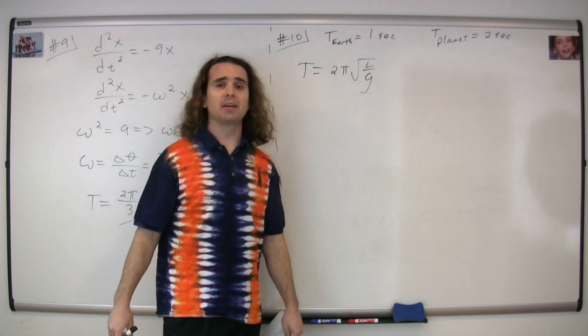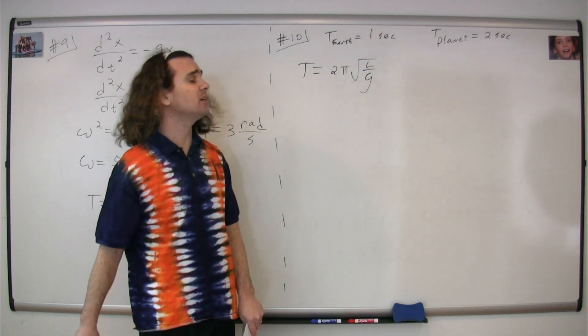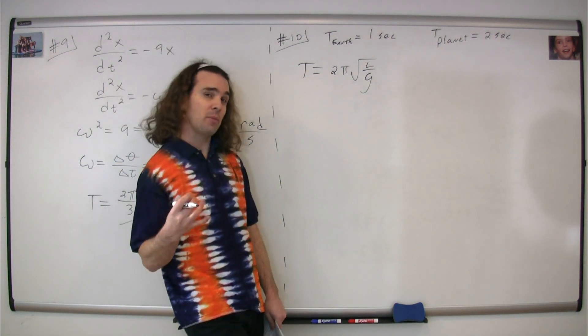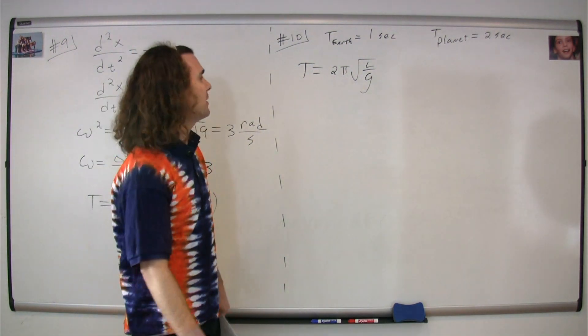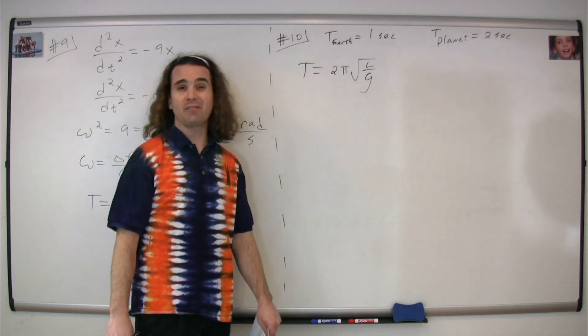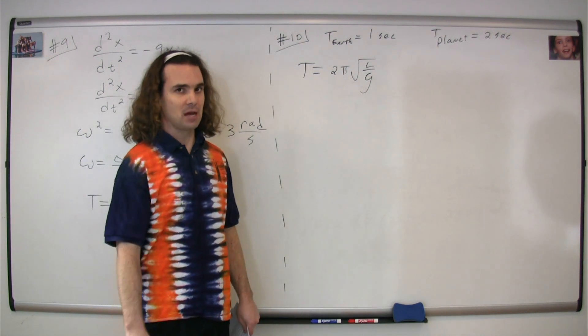We need to start with the equation for the period of a pendulum, which is T = 2π times the square root of L over g, where L is the length of the pendulum, the distance from the center of suspension to the center of mass, and g is the acceleration due to gravity on whatever planet you happen to be on.